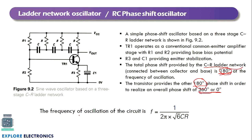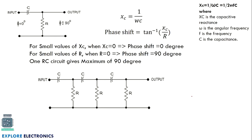The frequency of oscillation for this circuit is F = 1 / (2π·√6·CR). This is the expression for the frequency of the signal generated. To understand how we get a 180° phase shift from the RC network, consider a single RC pair. The capacitor reactance is Xc = 1/(ω·C), where ω is angular frequency. The phase shift provided by one RC stage is tan⁻¹(Xc / R).